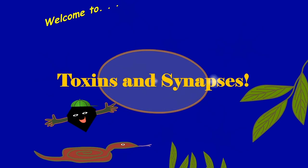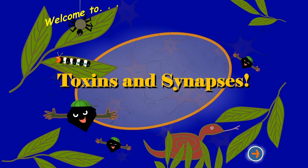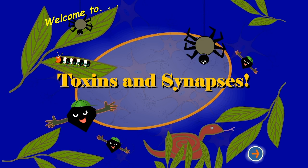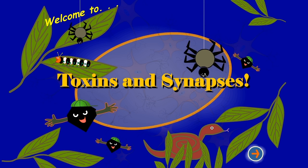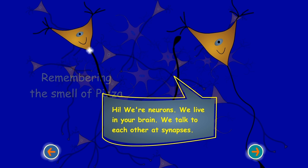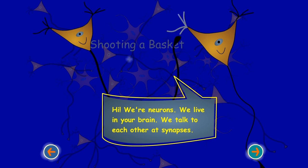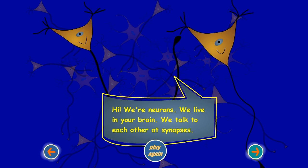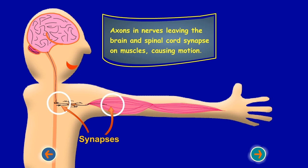Toxins and Synapses. Hi! We're neurons. We live in your brain. We talk to each other at synapses. Axons and nerves leaving the brain and spinal cord synapse on muscles, causing motion.